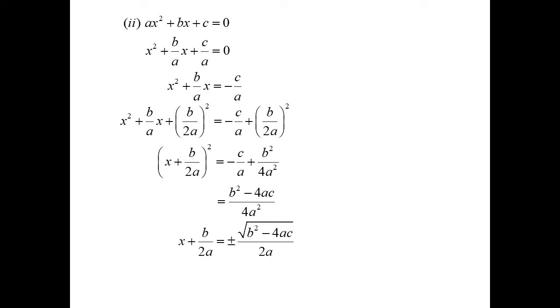Therefore x plus b on 2a must be plus or minus the square root of b squared minus 4ac all over 2a. Move the b across. There's our quadratic formula. So that's where it comes from.